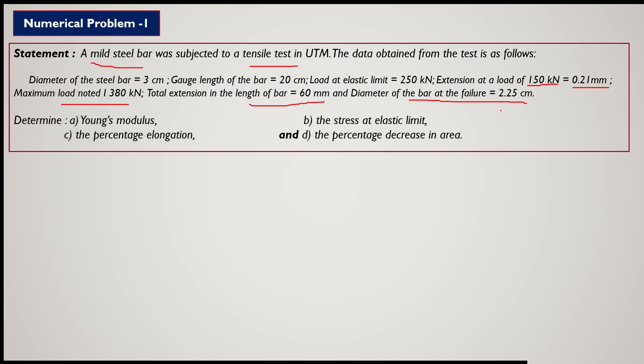What we have to find: first, Young's modulus of elasticity — the ratio of stress to strain within the elastic limit. Second, the stress at the elastic limit — the maximum load at elastic limit divided by area. Third, percentage elongation. Fourth, percentage decrease in area.